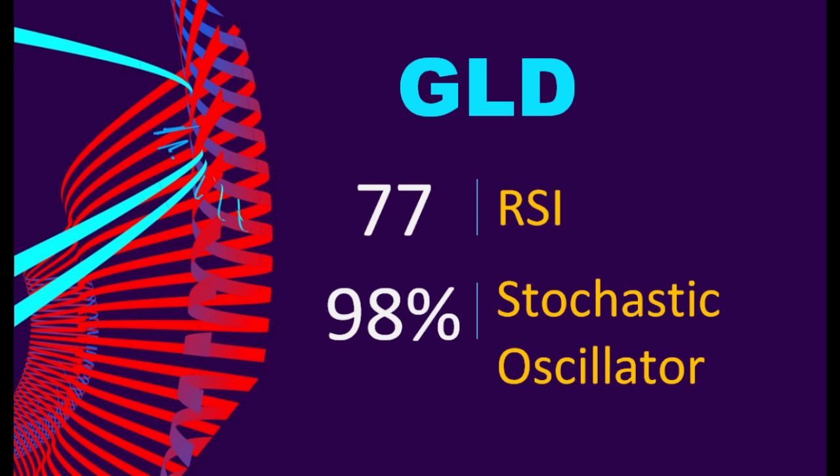It means that the stock price has been experiencing a strong uptrend and it has risen too fast, causing the RSI to reach a high level. The current stochastic oscillator of GLD is 98%. When the stochastic oscillator rises above the 80 level, it is usually considered overbought, indicating that the stock may be due for a price pullback.